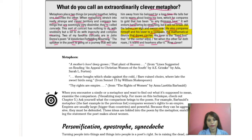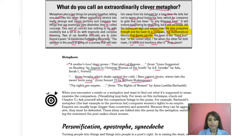There are other metaphors provided here as well. For example: 'A mother's love deep grows, that plant of heaven.' These lines are taken from 'An Appeal to Christian Women of the South' by A. E. Grimké. And also: 'These boughs which shake against the cold, bare ruined choirs where late the sweet birds sang' — from Sonnet 73 by William Shakespeare. And 'Thy rights are empire' — from 'The Rights of Women' by Anna Laetitia Barbauld.